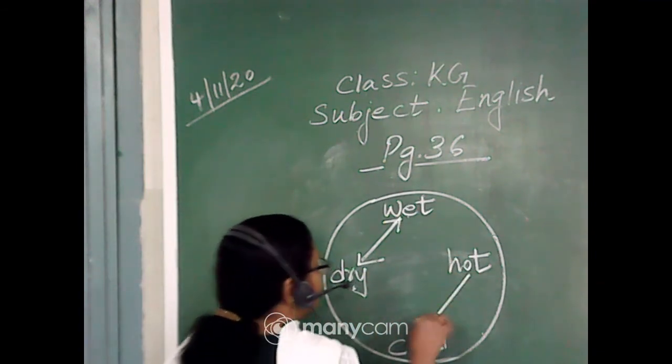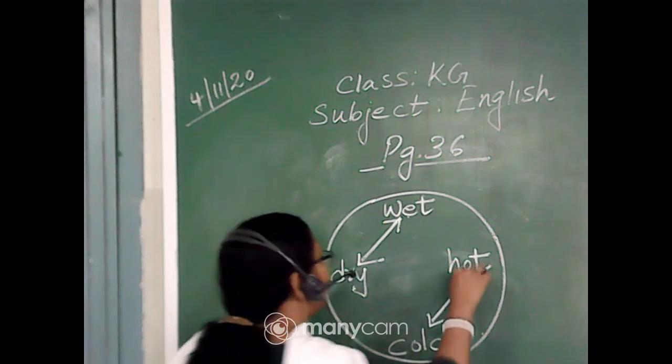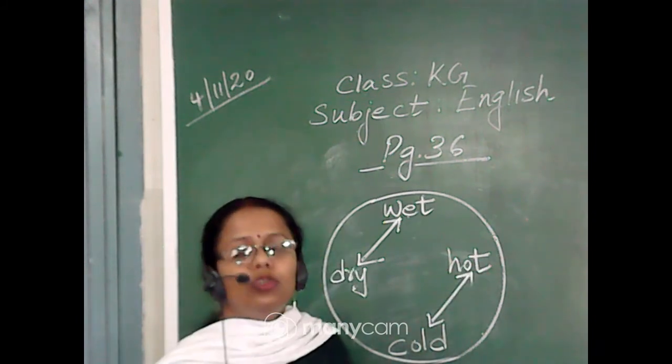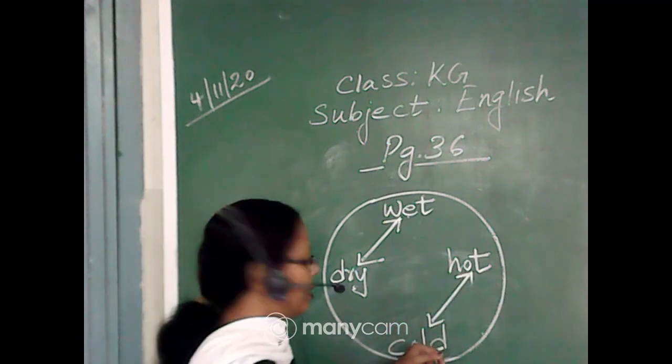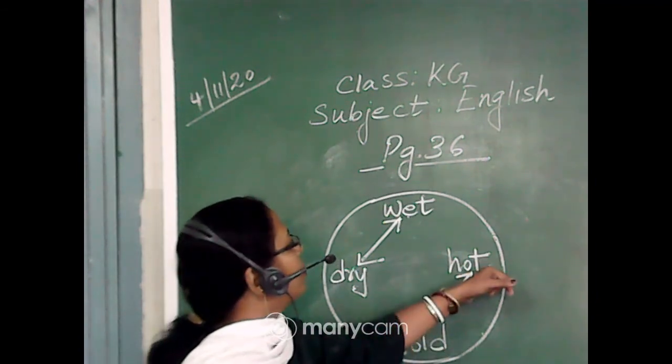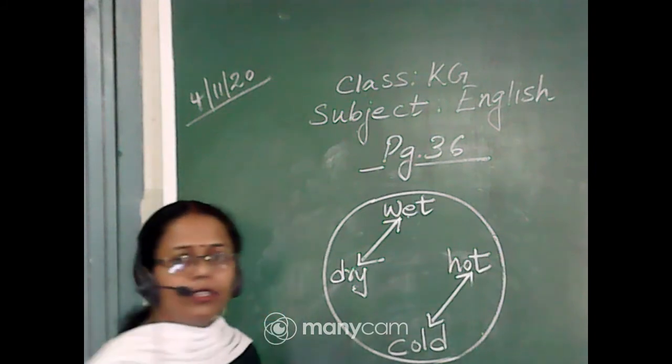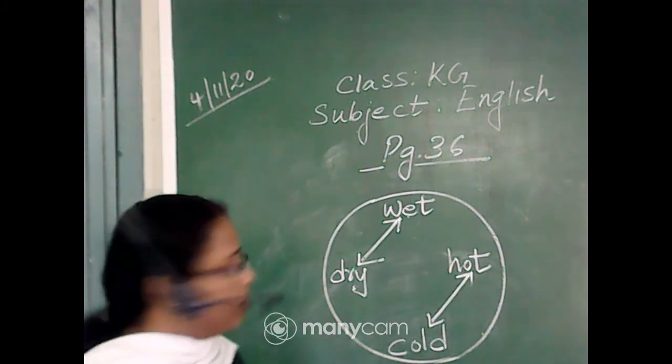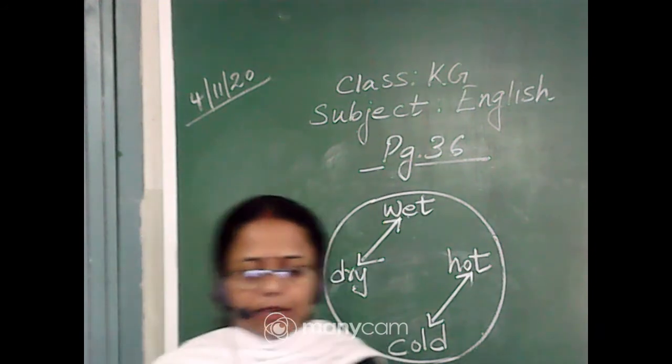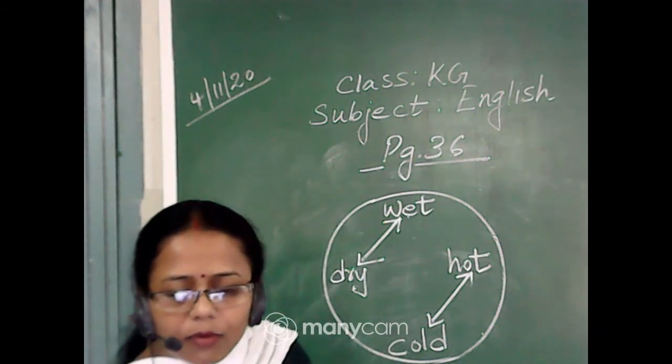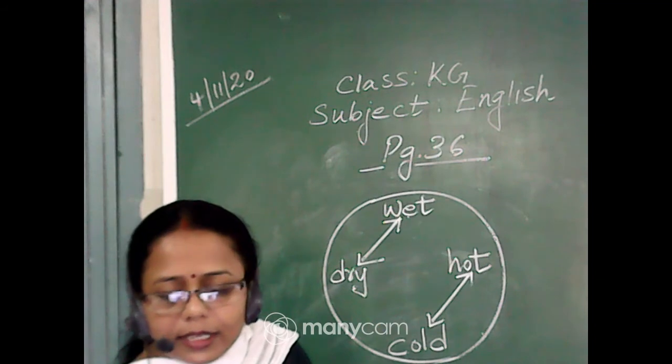Whereas, hot, cold. Again with the slanting line, we have joined them. That is hot. Opposite of hot is cold. And cold, opposite of cold is hot. Okay? Very nice. So students, I hope everyone has understood that how we have completed this part.